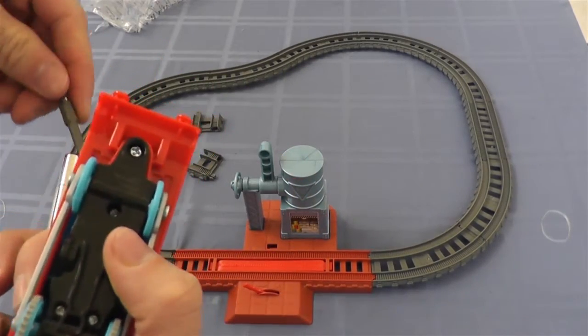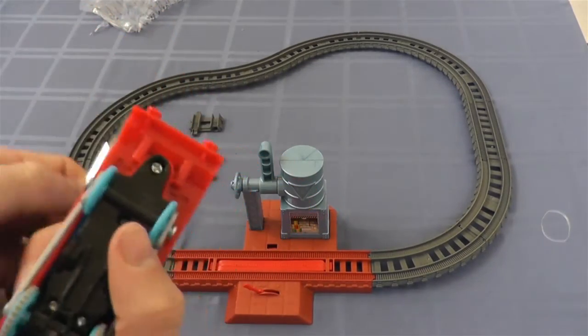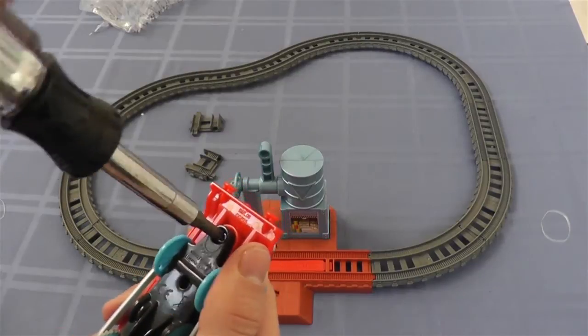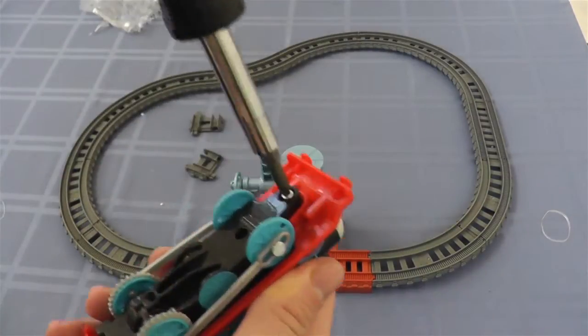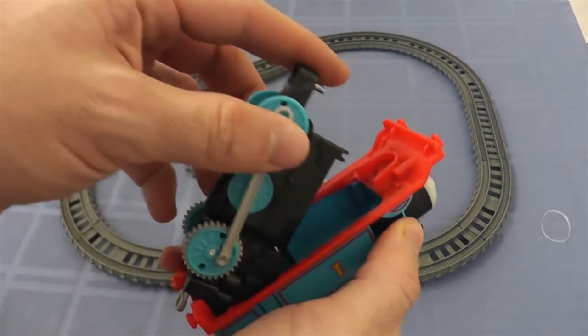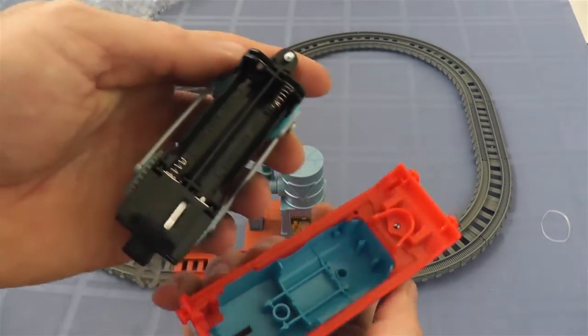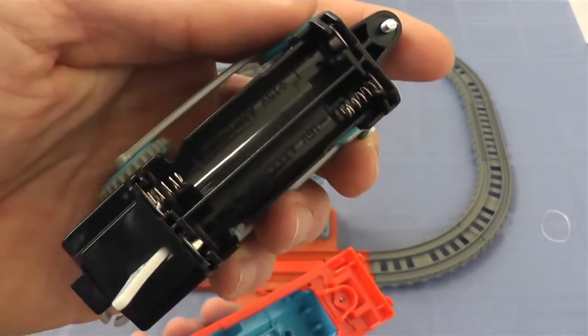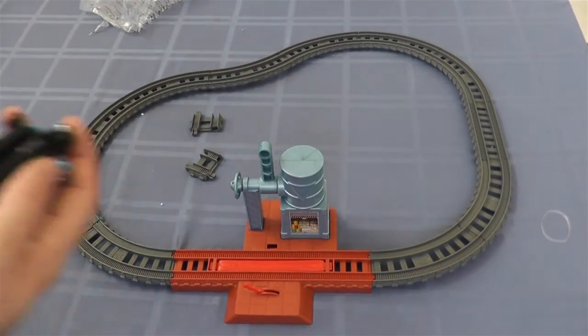The box, on all these boxes, they say no tools required. I would consider a screwdriver a tool, but I wonder when they mean no tools are required. They're referring to just building the tracks doesn't require tools because Thomas definitely requires tools. You'll see it takes two AAA batteries.